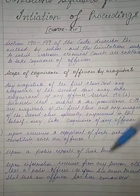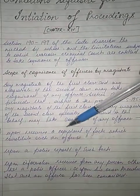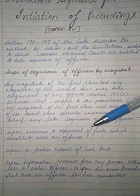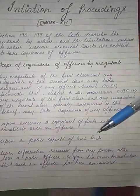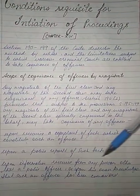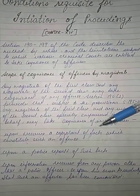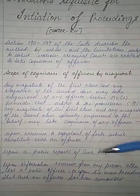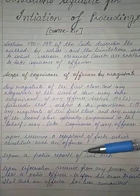There are three conditions: first, upon receiving a complaint of facts which constitute such an offense; second, upon a police report of such facts; and third, upon information received by any person other than a police officer, or upon his own knowledge that such an offense has been committed.